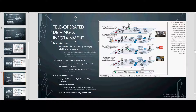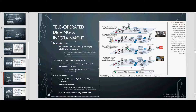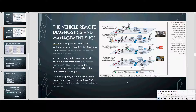The teledriving slice should ensure ultra-low latency and highly reliable RAN/data connectivity between the controlled vehicle and the remote operator. Unlike the autonomous driving slice, such service will be extremely limited and occasionally activated, resulting in a light footprint on the CN. The infotainment slice is equipped to use multiple RATs for higher throughput and to host content closer to the user at the eNodeB, and multiple UPF instances may be required. The vehicle remote diagnostics and management slice is configured to support the exchange of small amounts of low-frequency data between many vehicles and remote servers outside the CN.